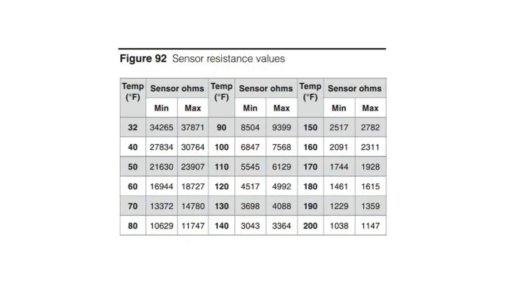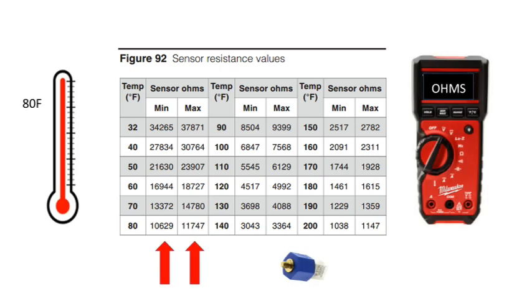Now that we have a pretty solid grip on the nature of this error, there are a few other diagnostic tips we can take a look at. First, these sensors all have identical resistance values, and you will see this chart in each of the manuals. It represents the resistance you should be seeing at varying temperatures. If you take an ohm reading on one of these sensors with a given temperature value of, let's say, 80 degrees, you should see between 10,629 and 11,747 ohms. If it's not in that range, replace the sensor.